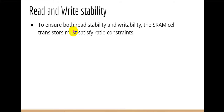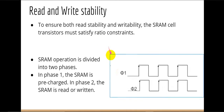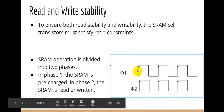To ensure both read and write stability, the SRAM cell transistors must satisfy the ratio constants. Let me first explain a very important operation of your SRAM memory cell. SRAM operation is divided into two phases: in phase one the SRAM is precharged, and in phase two the SRAM is read or written. So basically, before any read or write operation we have to precharge the bit and bit-bar lines.